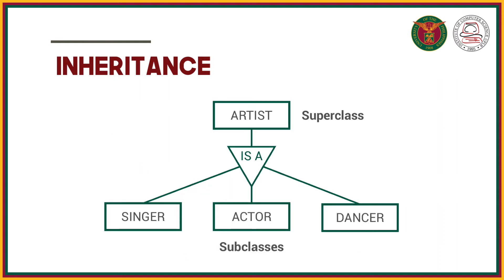In inheritance, always remember that the subclass has an is-a relationship to its superclass. This can be read as: singer is an artist, actor is an artist, and dancer is an artist. Don't be confused — some may call this a composition or has-a relationship, reading it as 'artist is composed of a singer, actor, and dancer.' That is wrong.